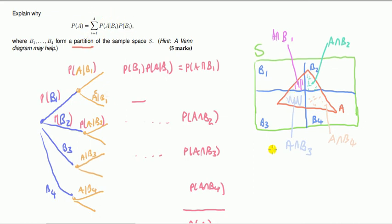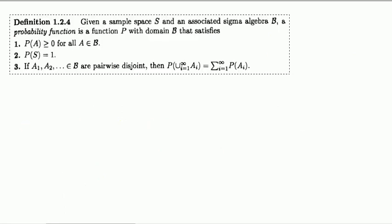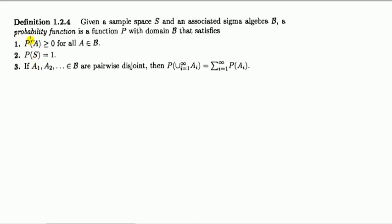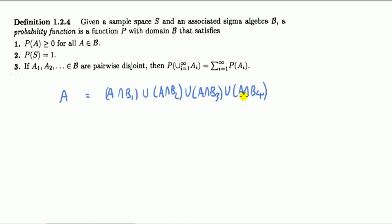So we've just talked about the idea of the proof. These four distinct intersections — they form A. So the probability of A is equal to the probability of each of these intersections, which is what the tree diagram is laying out. These are the three axioms — sometimes your professor might state them slightly differently. This is the third one, known as the countably additive assumption, and it's very important for proofs.